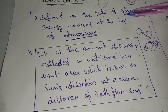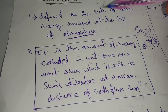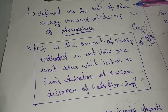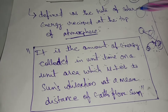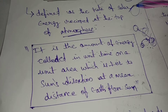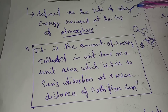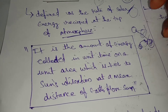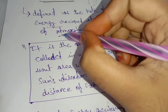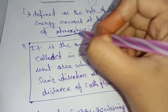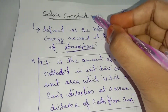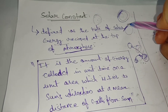The solar constant is defined as the rate of solar energy received at the top of the atmosphere. The rate of solar energy received at the top of the atmosphere is nothing but the solar constant.